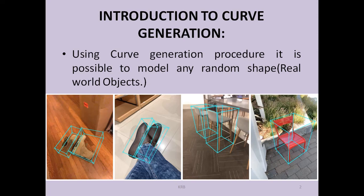First let's see the introduction to curve generation. Using curve generation procedure it is possible to model any random shape — that is real world objects. As shown in the examples below, there are 4 images: the first two are of shoes and the second two are chairs. As humans we can easily understand those, but for a system to understand whether they are shoes or chairs, we have one particular domain — image processing — in which we use curve generation techniques to detect an object by forming curves, lines, etc.